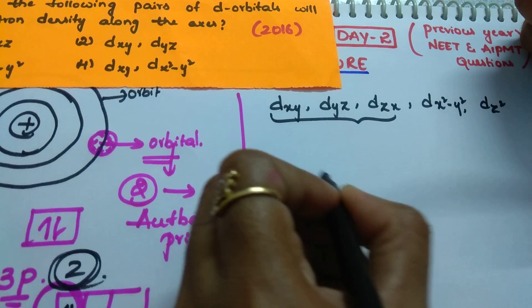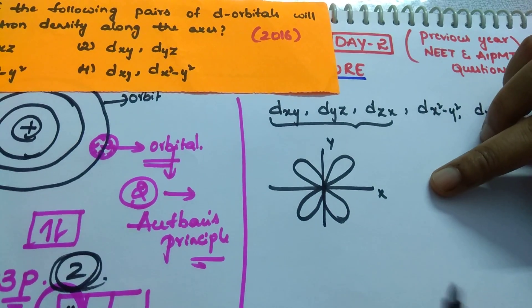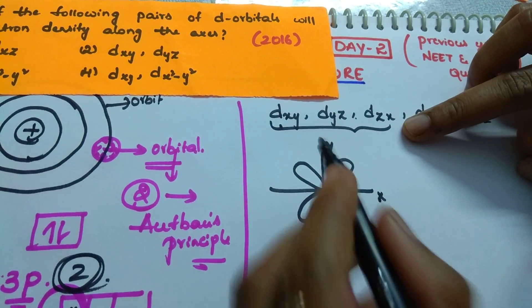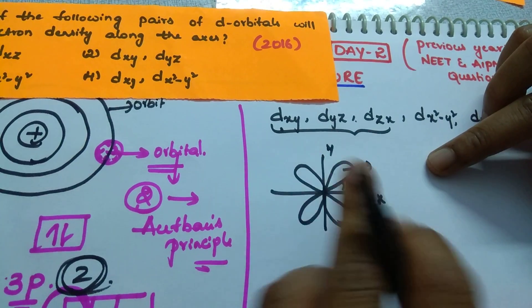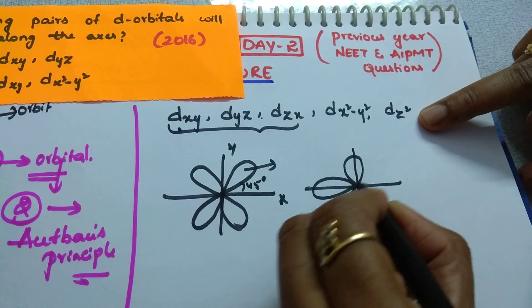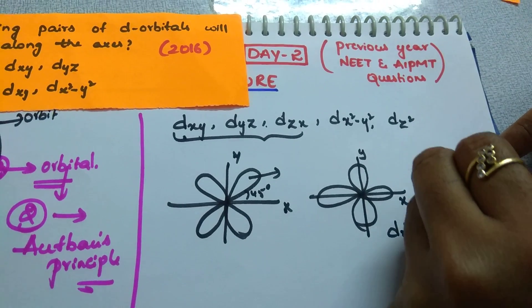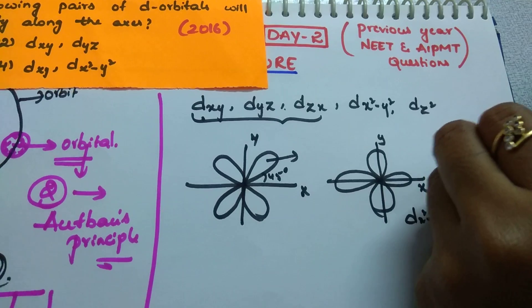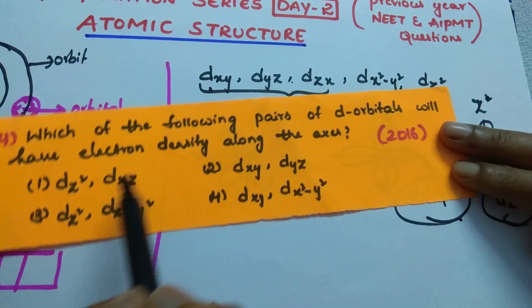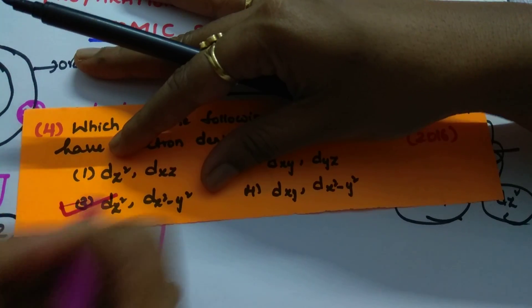Out of these 5, which orbitals have lobes present between the axes? If the axes are XY, it will be dxy. If YZ, then dyz. If Z and X, then dzx. In these cases, the lobe is present between the axes. Coming to dx²-y², the lobes are present exactly along the axis. And dz² is along the z-axis. So the answer is: dz² and dx²-y² have electron density along the axis.